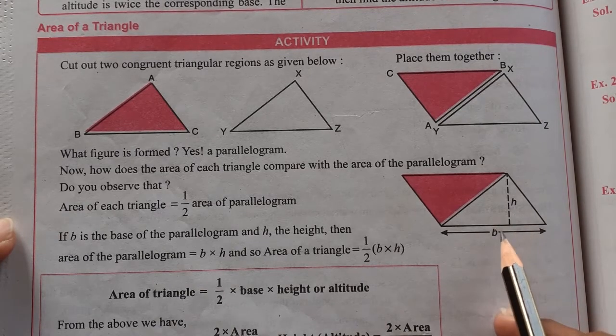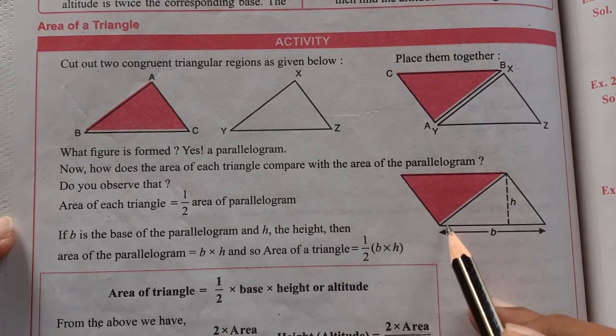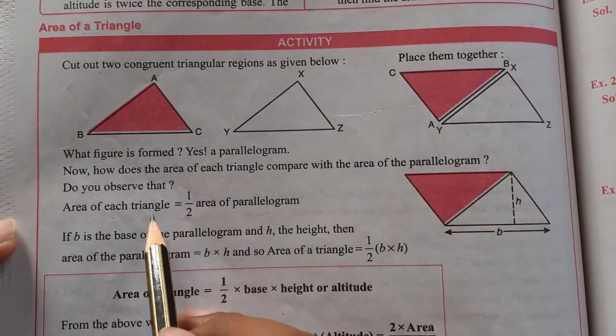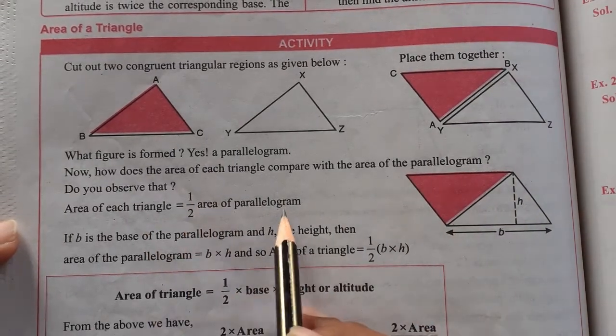But if you understand that we don't need a parallelogram, we need half parallelogram. So this area of triangle will be 1 upon 2 area of a parallelogram.